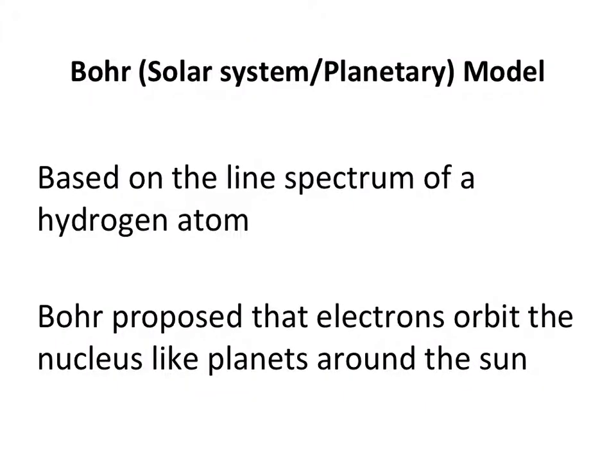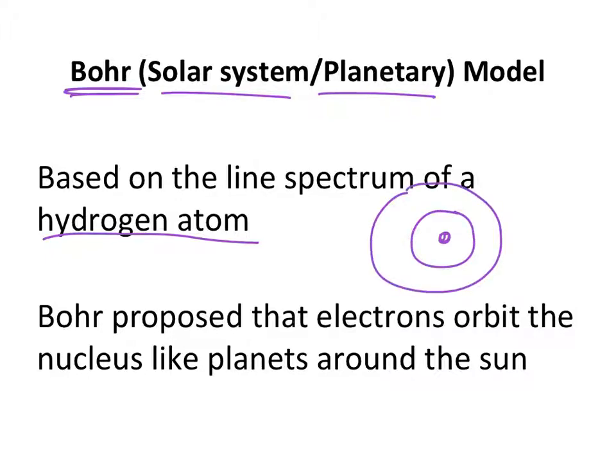So first we're going to start with the Bohr model of the atom, that's the solar system or planetary model of the atom. It's based on the line spectrum of a hydrogen atom. Bohr proposed that electrons orbit the nucleus like planets orbit around the sun. So here's my really bad picture of a nucleus right there in the center and maybe some electrons on these little rings. Now that seems like an interesting idea. Why would Bohr have thought that the electrons orbit around the nucleus like planets around the sun? What would have given him that idea?